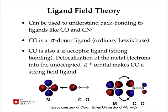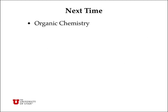Ligand field theory can be used to understand backbonding to ligands like CO and CN⁻. CO is a sigma donor ligand — the ordinary Lewis acid-base interaction where CO donates electron density directly into the metal. But it's also a pi-acceptor ligand, where electron density initially on the metal is delocalized into the pi-star orbitals on CO. So electron density flows both ways: sigma-type orbitals flow from the ligand to the metal, and pi-type orbitals flow from the metal back to the ligand. All of this delocalization helps to lower the energy of the electrons, making a very strong bond between CO and some metals. Next time we'll talk about organic chemistry — see you then.